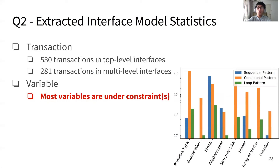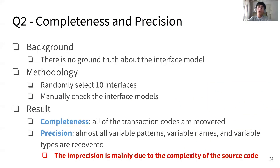As for the extracted interface model, FANCE extracted 530 transactions in top-level interfaces and 281 transactions in multi-level interfaces. Regarding variables, we focus on variable patterns due to time constraints. From the figure, we can see that most variables are under constraints. Since there is no ground truth about the interface model, we randomly selected 10 interfaces and manually checked them. We found that all transaction codes are recovered, fulfilling completeness, and almost all variable patterns, variable names, and variable types are recovered. The inaccuracy is mainly due to the complexity of the source code.